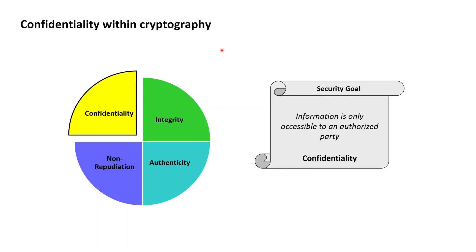The first security goal that we have a closer look at is confidentiality, which is the security goal that information in a digital information system is only accessible to authorized parties.